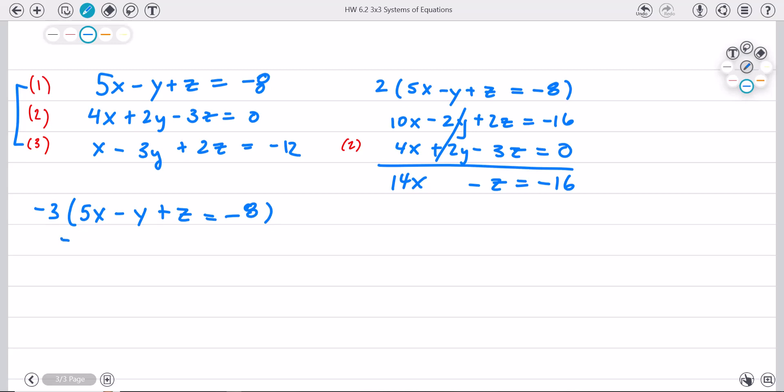Negative three times five x is negative fifteen x, and negative times a negative is a positive three y. It's going to be a minus three z, and negative and a negative, that will be a positive twenty four.